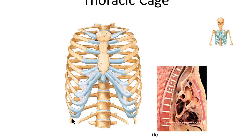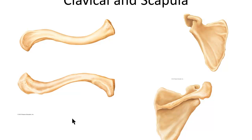Moving into the appendicular skeleton on page 23 of your lab packet — these are all the appendages coming off of the main frame of the body, or the axial skeleton. We have the pectoral girdle that forms the shoulder joint and the pelvic girdle that forms the hip joint. Off of these girdles come the arms and the legs. We'll start at the top of the body and work our way down.